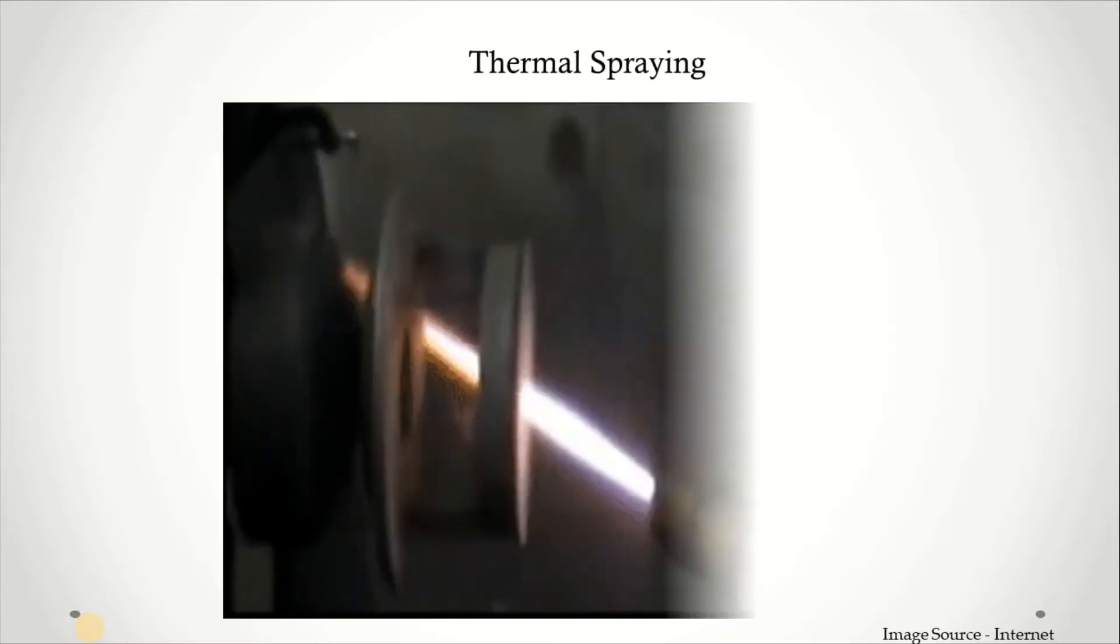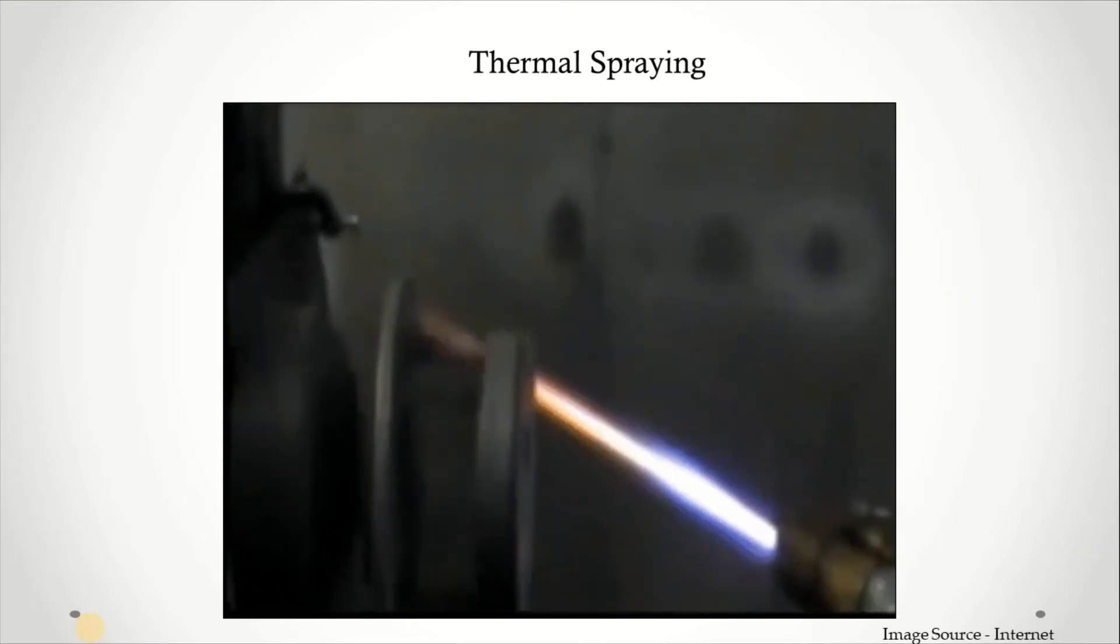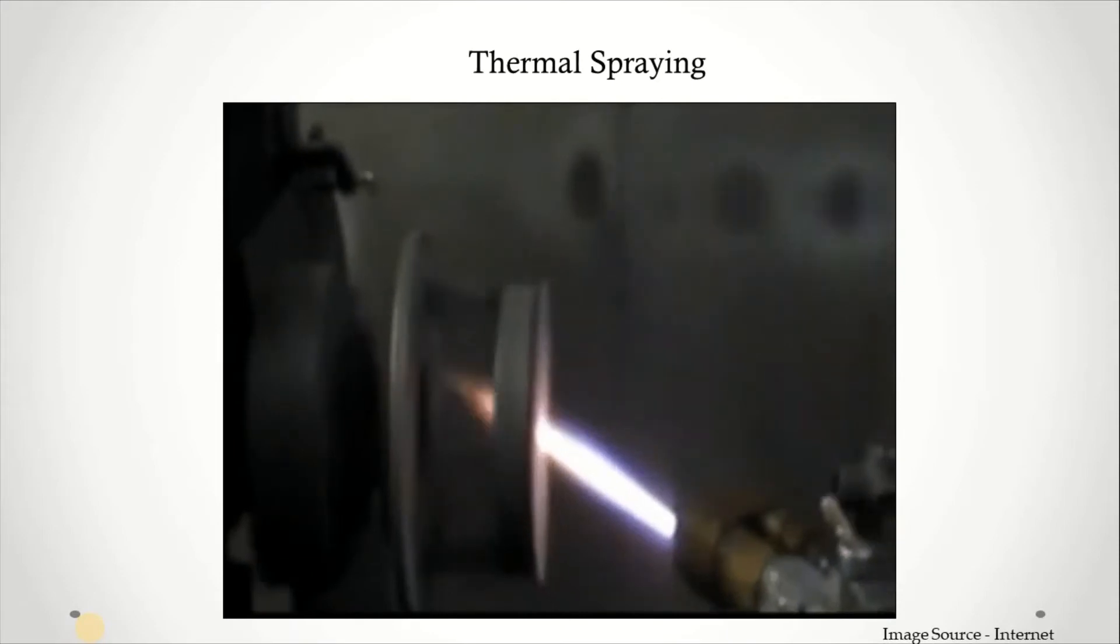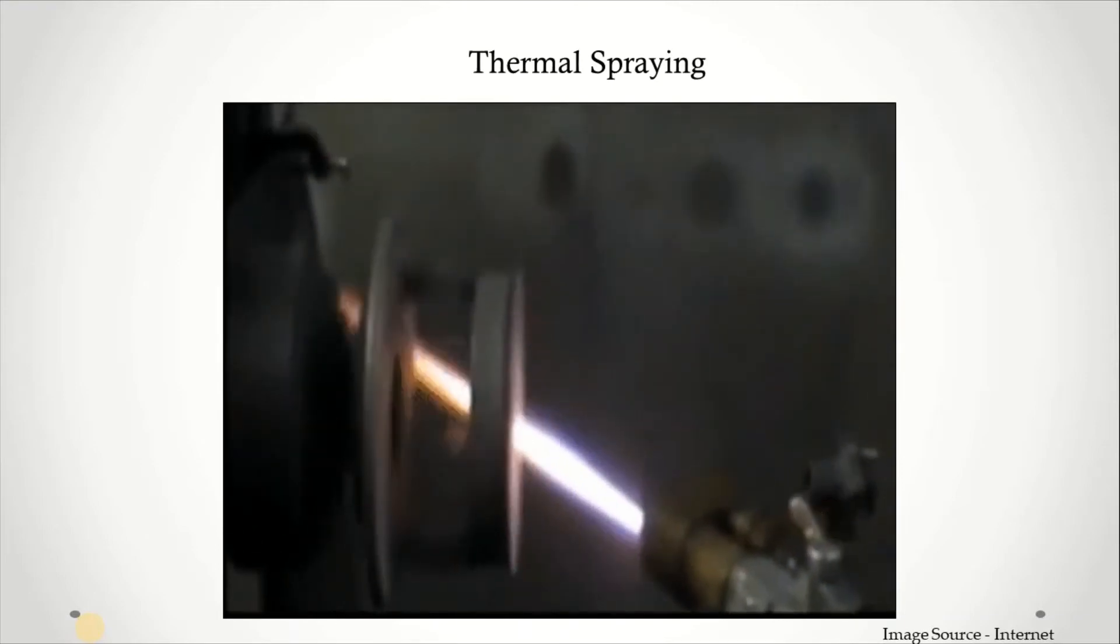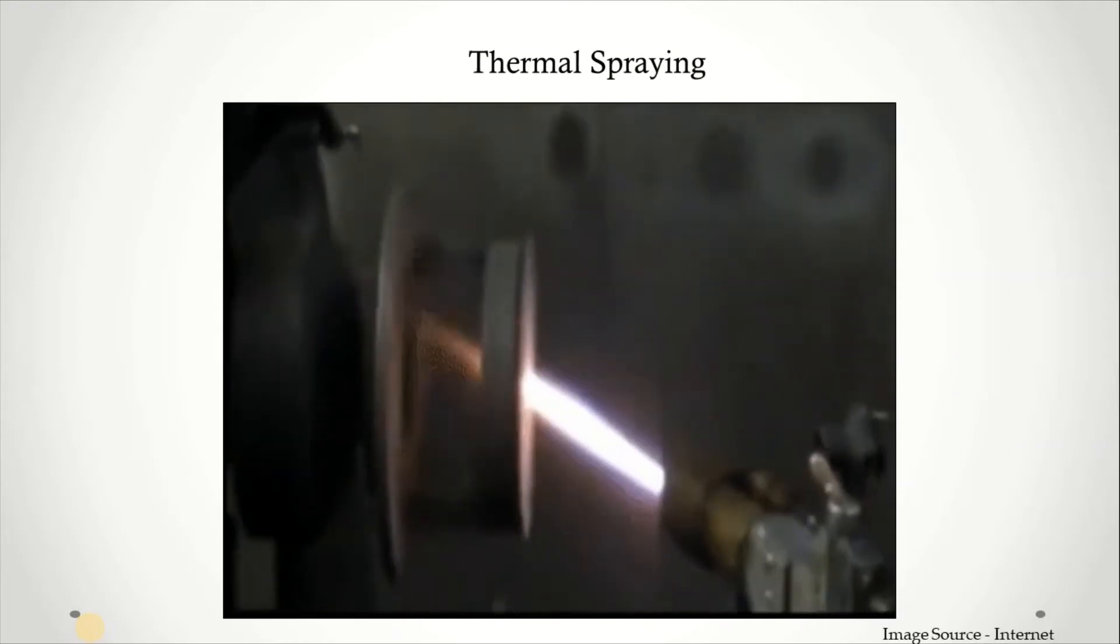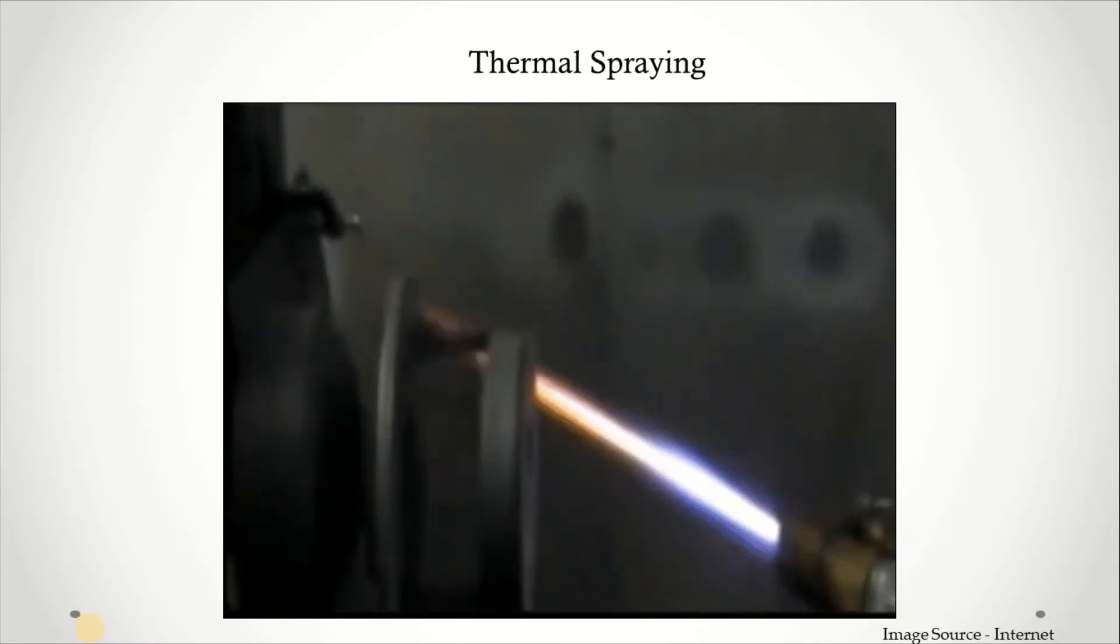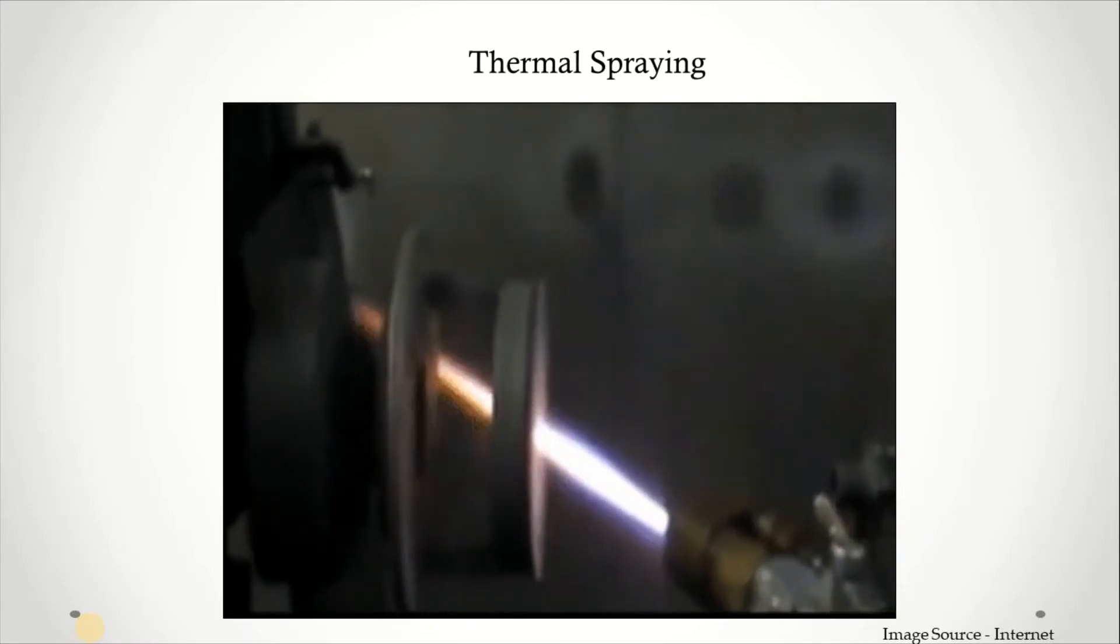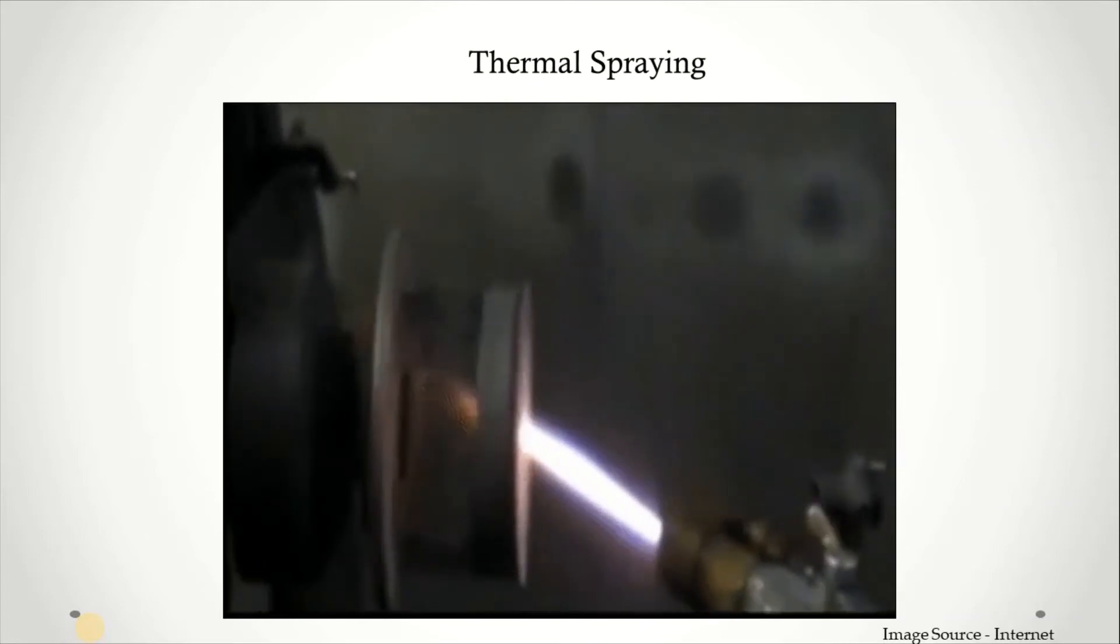Next one is thermal spray. This thermal spraying technique is used in coating processes in which metal materials are spread onto the surface. The feedstock is heated by electrical or chemical means. This process provides material resistance to wear, erosion, cavitation, corrosion, and heat. It will provide resistance to wear, corrosion, erosion, and heat.